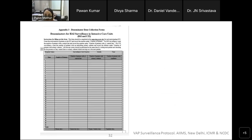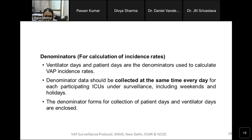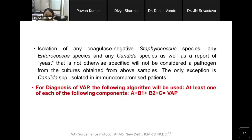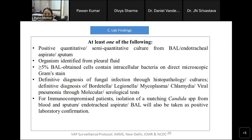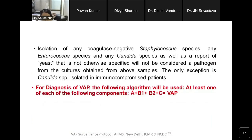Q&A — Microbiological criteria clarification: It is just one of these criteria — either a positive culture at 10^5 (quantitative or semi-quantitative) from BAL, endotracheal aspirate, or sputum; or a culture-positive pleural fluid; or more than 5% of BAL cells containing intracellular bacteria on microscopy; or a definitive diagnosis of fungal infection through histopathology or cultures; or atypical organisms identified through molecular or serological tests. Only for immunocompromised patients can you take Candida if there is a matching culture from blood and respiratory samples. Otherwise, Candida species, CoNS, and Enterococcus must be ignored.